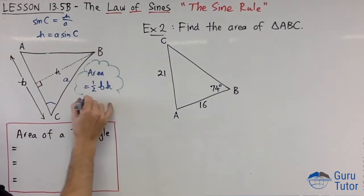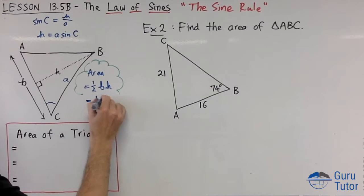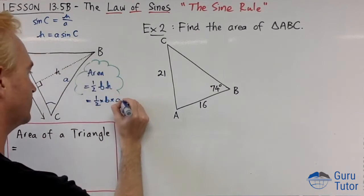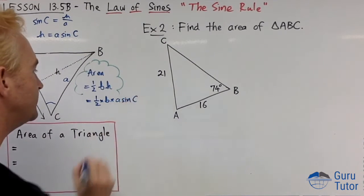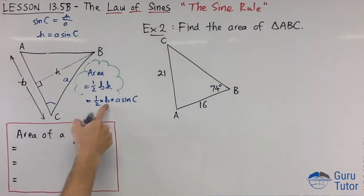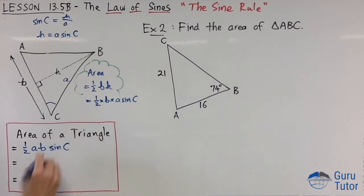I'm going to get a half times b times h, and h is a sine C. That gives me this expression: the area of a triangle is a half ab sine C, or a half times a times b times sine C.